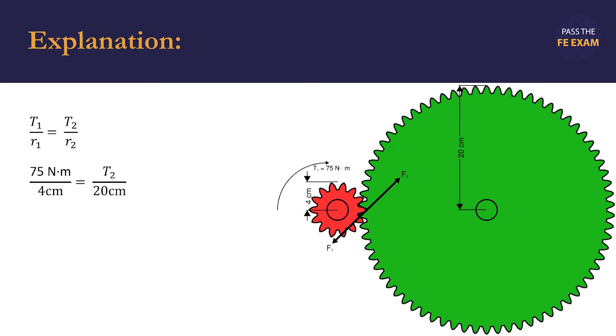Now, all of our variables are known, except for T2, and that's what we're searching for. So, we substitute 75 newton meters into the torque experienced by the smaller gear shaft. This is given to us at the beginning of the problem.